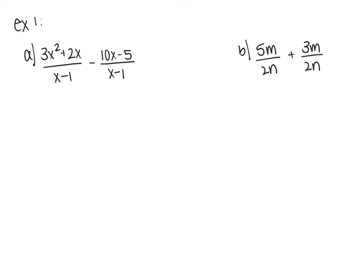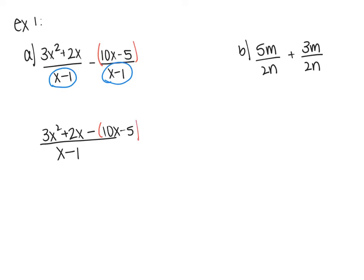Example 1 involves adding and subtracting when the denominators are already common. I check my denominators — I've got X minus 1 and X minus 1, so because they already share a common denominator, I can stick both fractions over the same denominator. I get 3X² plus 2X, and then for the minus sign I have to put everything in parentheses, because this problem says minus this whole thing. If you don't use parentheses, you will get the wrong answer — that's only true for subtraction.